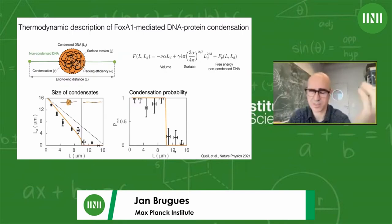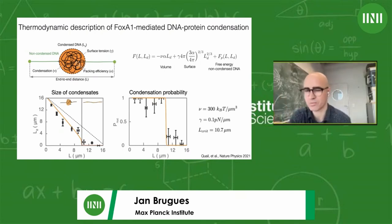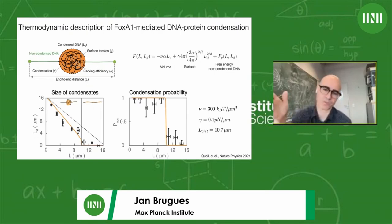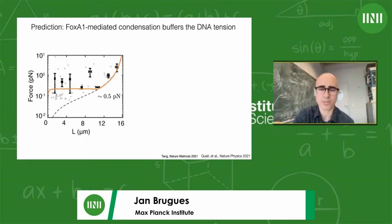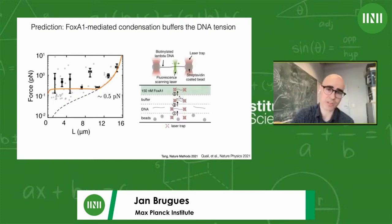To test the first-order transition more specifically, we measured condensation probability — whether a condensate forms at a fixed end-to-end distance. It's essentially one below a critical end-to-end distance and drops to zero beyond it, consistent with theory. From these two datasets, we extract three essential parameters: bulk free energy per unit volume, surface tension, and the critical length. We also predict the force the condensate exerts on the non-condensed polymer — roughly constant at about one piconewton — validated with optical tweezers.